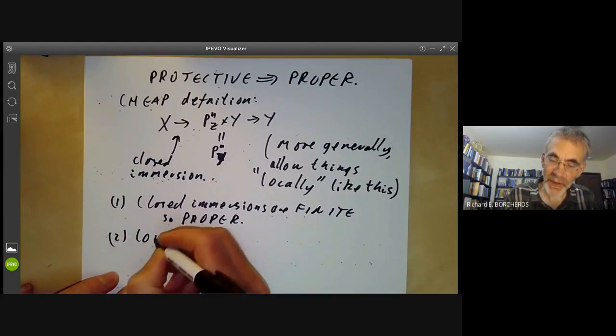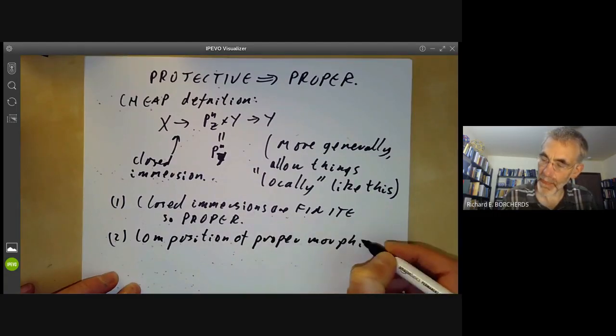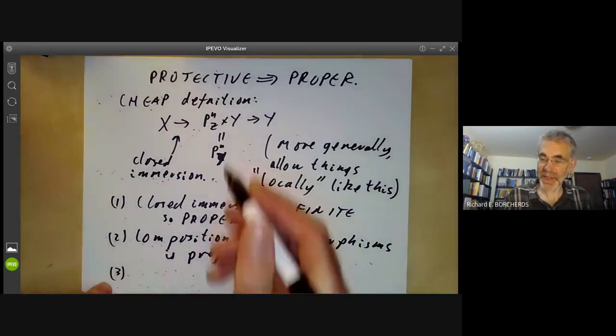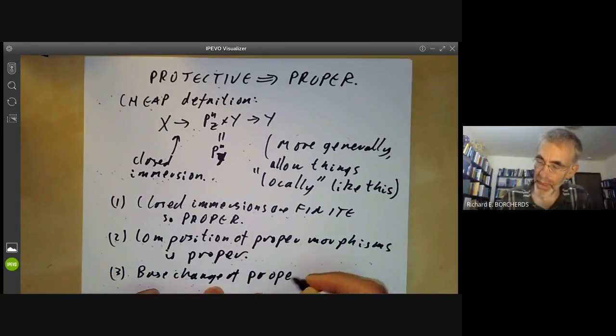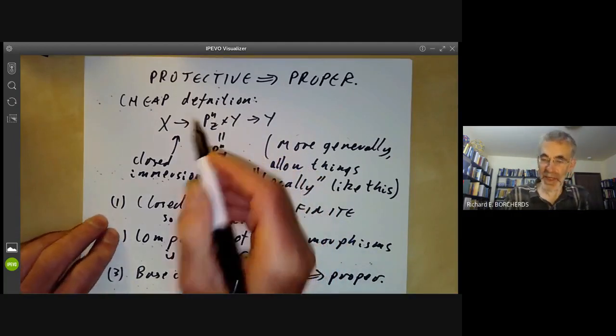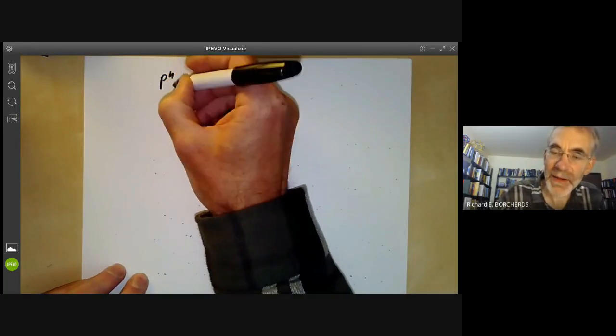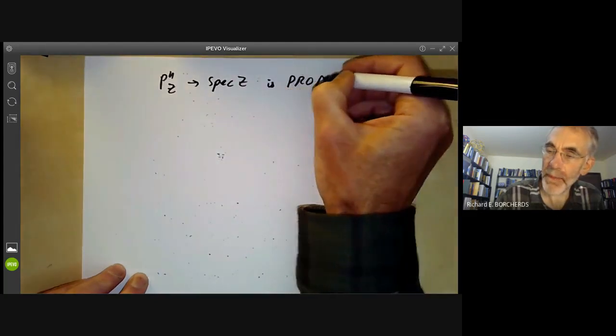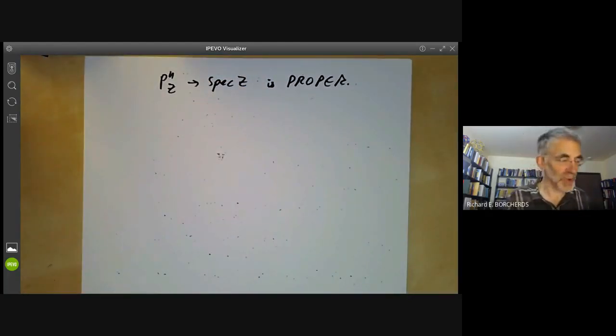Secondly, it's easy to check the composition of proper morphisms is proper. And thirdly, it's easy to check that the base change of proper morphisms is also proper. So if we put all these together, we see that the essential part of this is to prove that P^N_Z to a point spec of Z is proper. So this is the core part of the proof and all the rest is just routine bookkeeping.